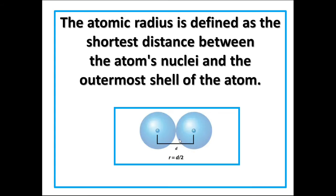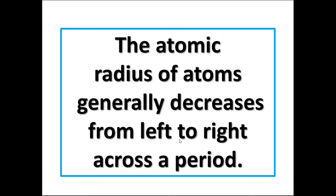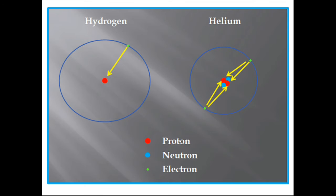Now, the periodic trend: across a period, the atomic radius of an atom generally decreases from left to right across a period. Observe this diagram showing hydrogen and helium, both having a nucleus at the center and valence electrons in the outermost shell.